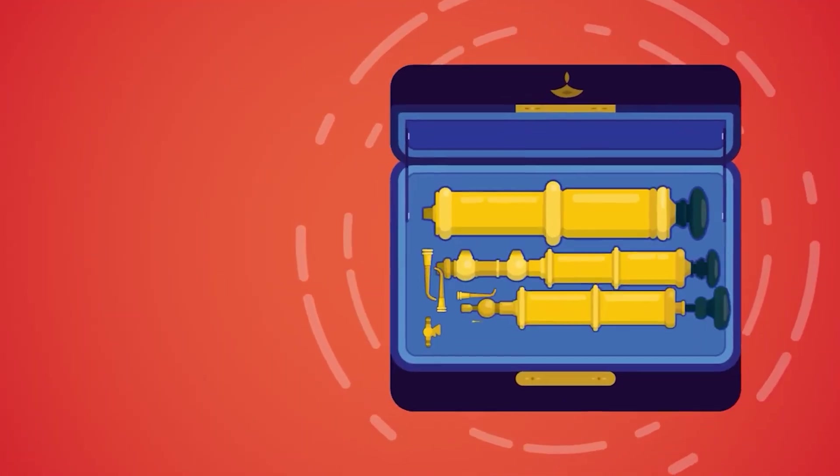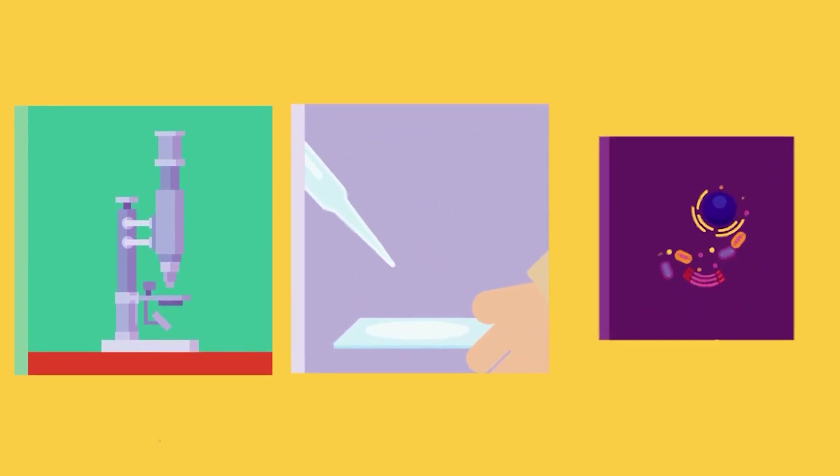Electron microscopes are used in a variety of fields, materials science, including biology, and nanotechnology.